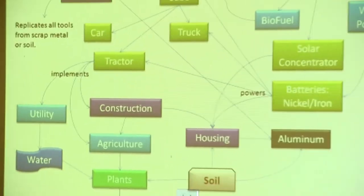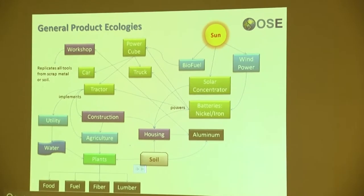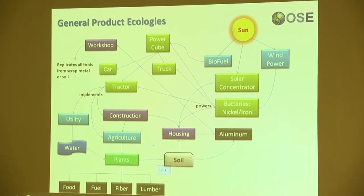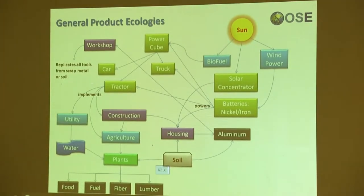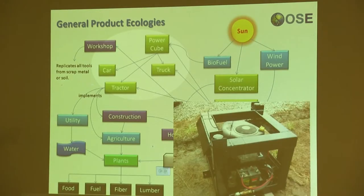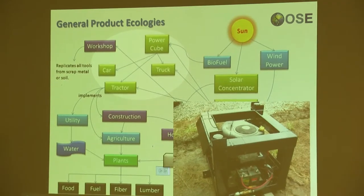The concept of product ecology refers to a kind of synergy of machines — not ecology in the biological sense, but as in the interaction of machines. For example, the power cube is an internal combustion engine in a steel frame that can be swapped between different machines, such as a car, a tractor, a truck, or a brick press. So these machines all interact — that's what the ecology stands for.